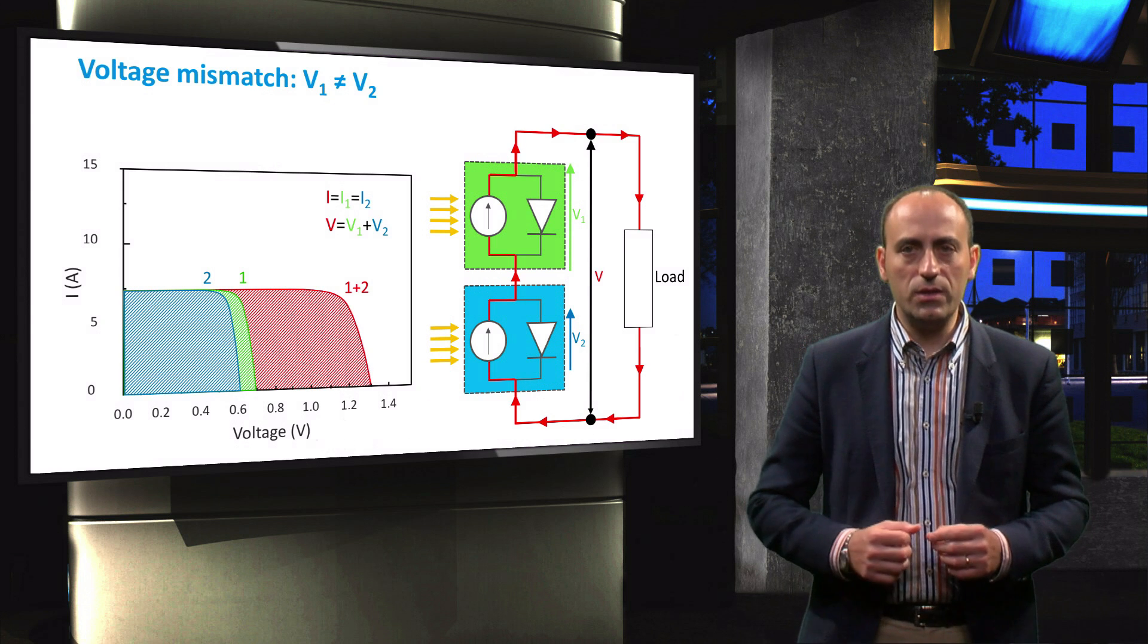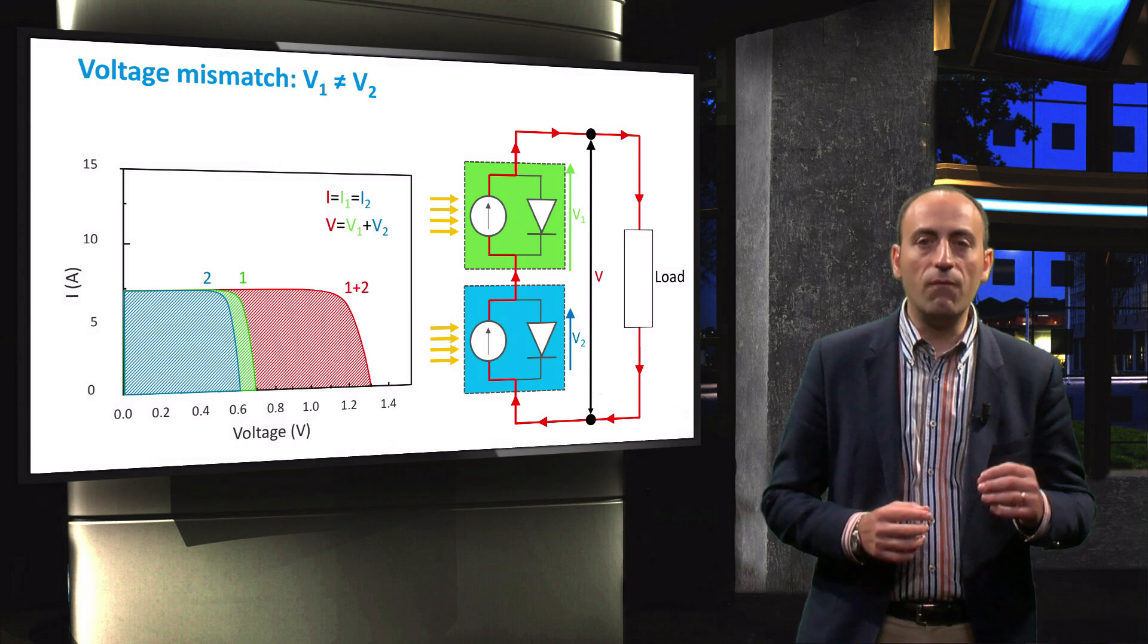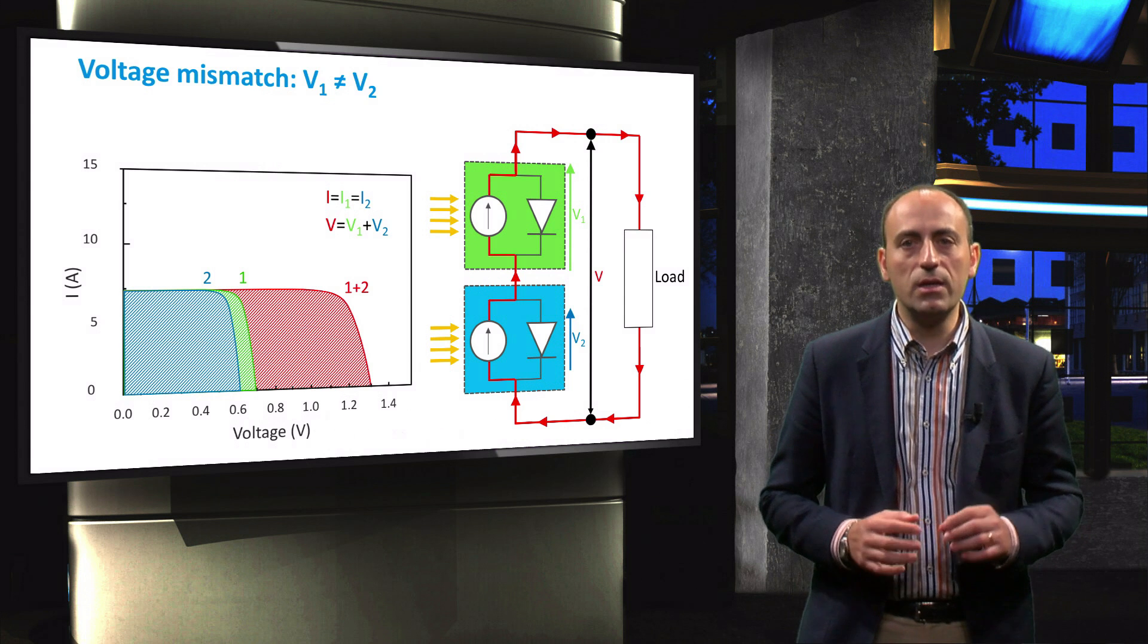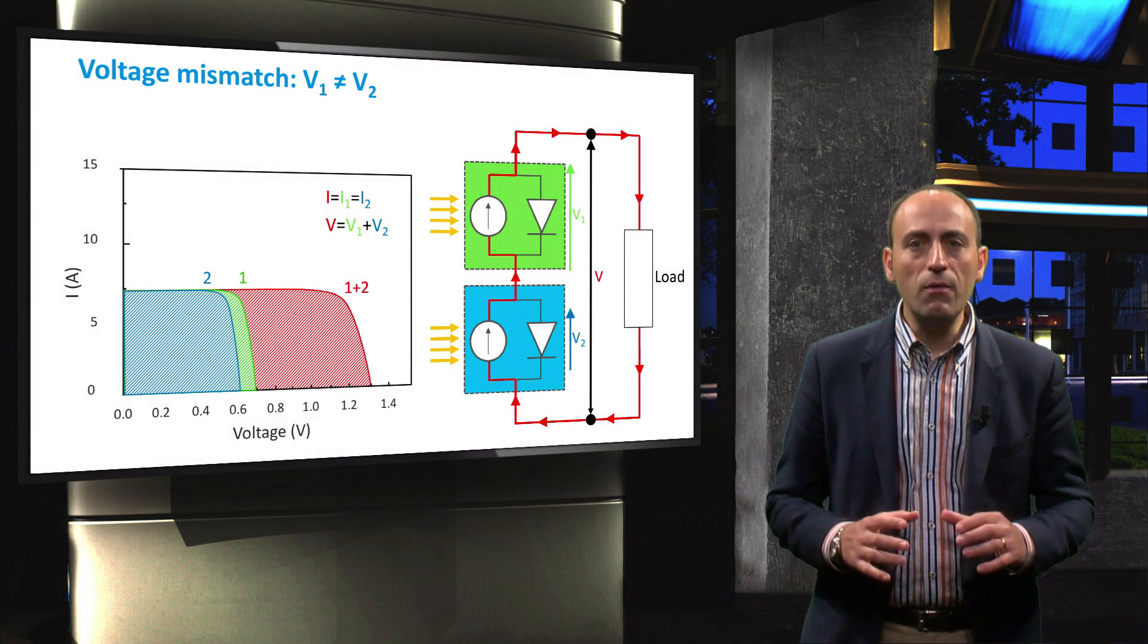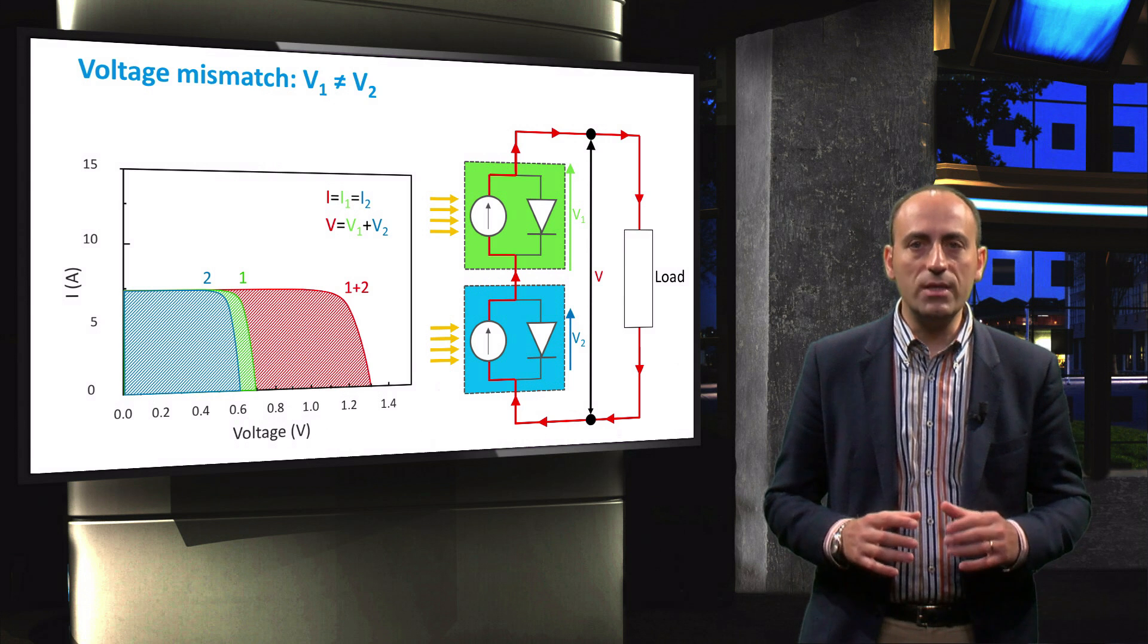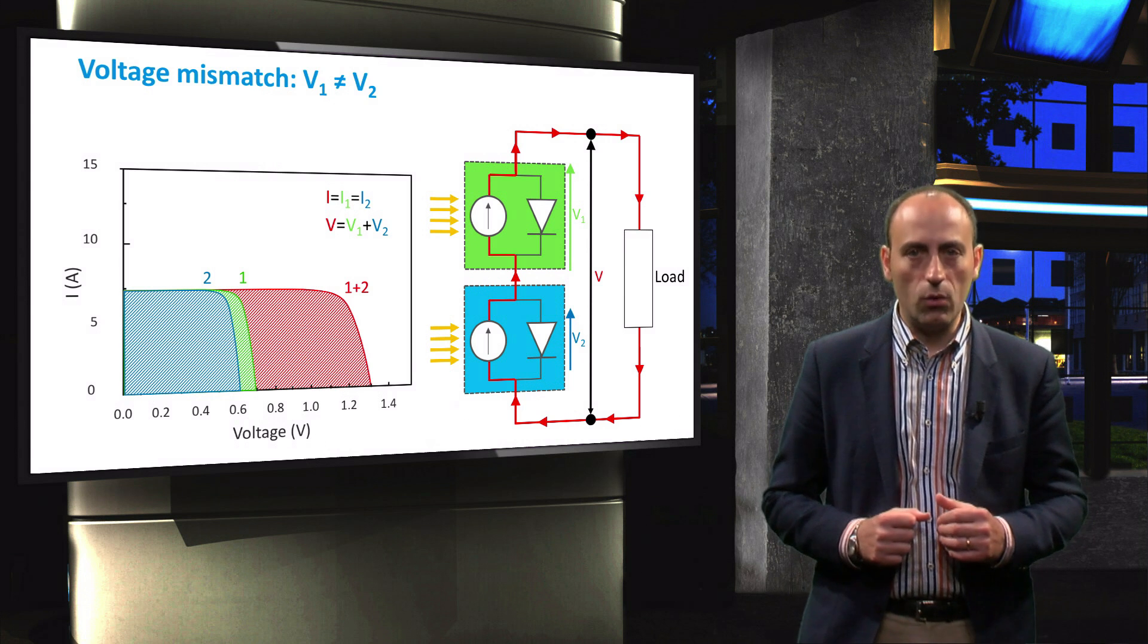The IV characteristic of the series connected and voltage mismatched solar cells is shown here. The current remains the same, while the overall voltage is again the sum of the two cell voltages.